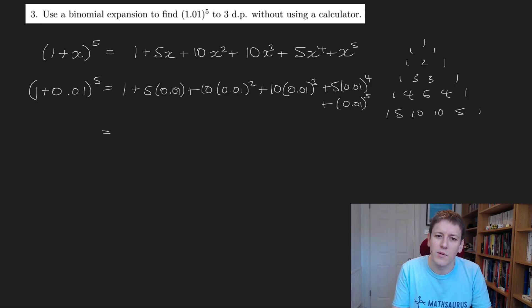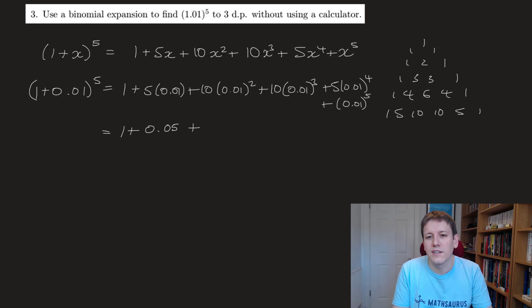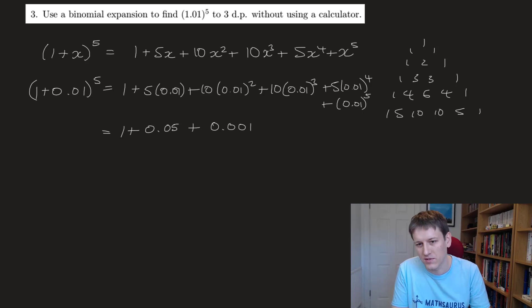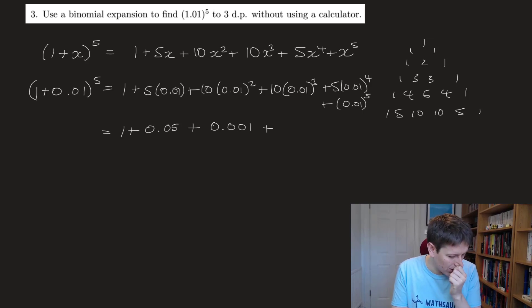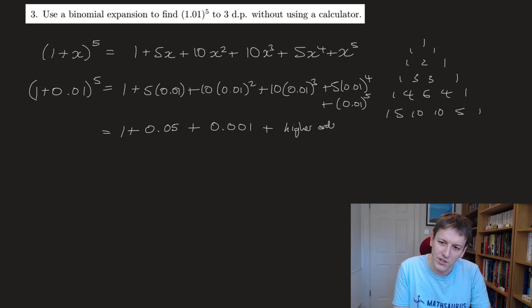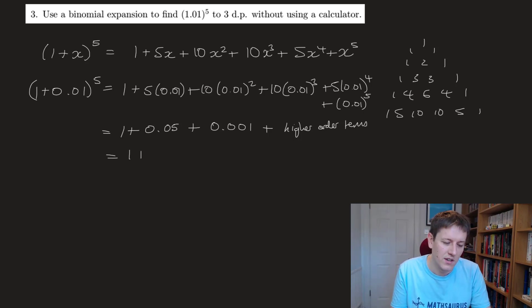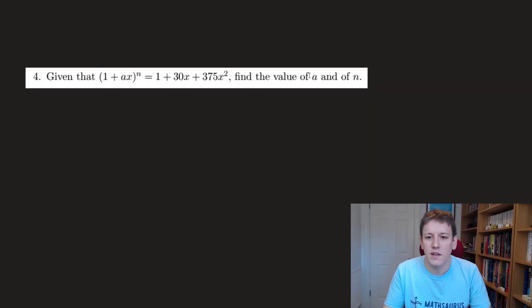Thinking about the size of each term: we get 1 + 0.05, then 10 × 0.01² = 10 × 0.0001 = 0.001. All the higher-order terms — like 10 × 0.01³ — have two or more extra zeros and don't affect three decimal places, so we can ignore them. To three decimal places, the answer is 1.051.